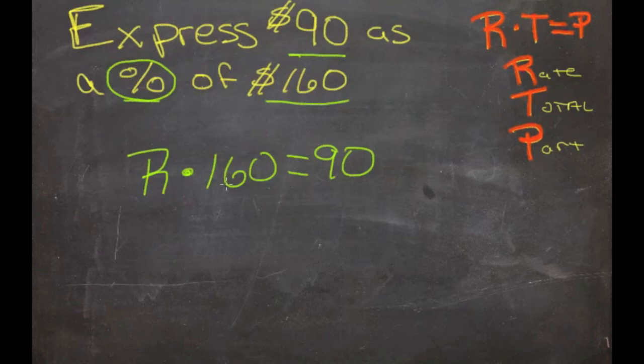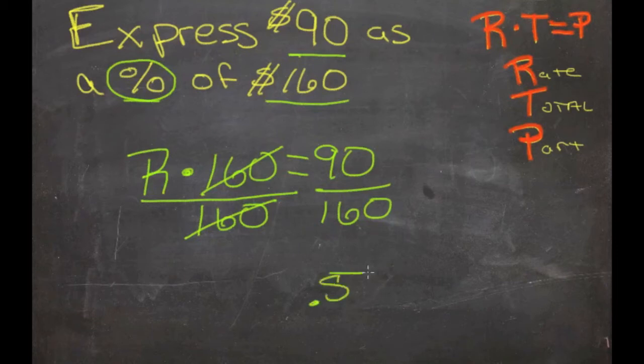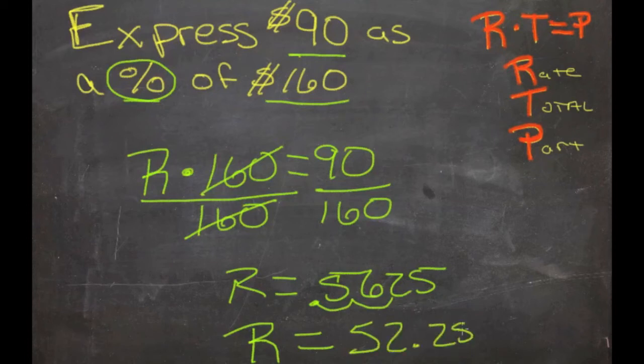To solve for r, we need to get rid of this 160. Since we're multiplying by 160, we'll divide both sides. 160 divided by 160 is 1, and 90 divided by 160 is 0.5625. So r equals 0.5625 as a decimal. As a percent, we move the decimal place over two points, and we get r equals 56.25%.